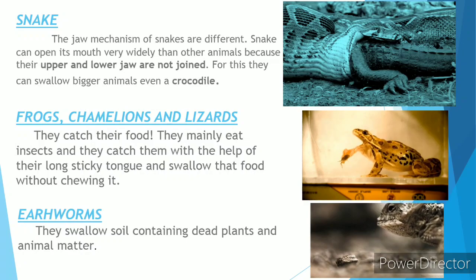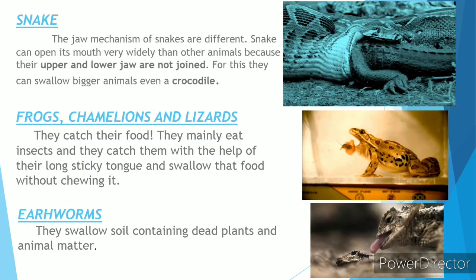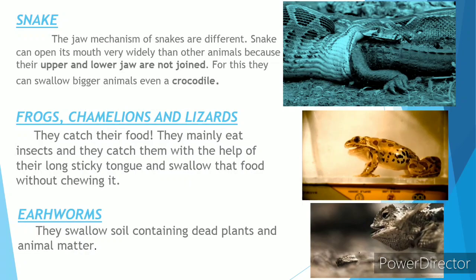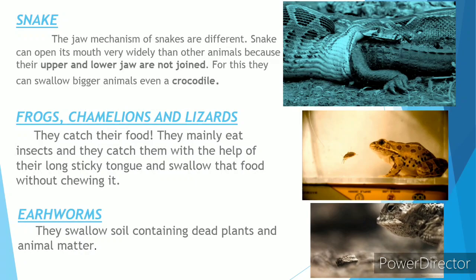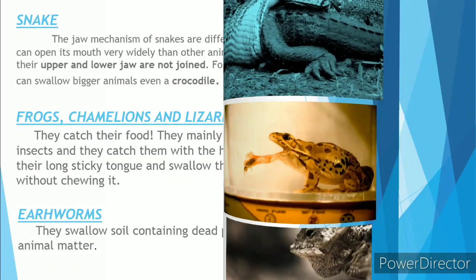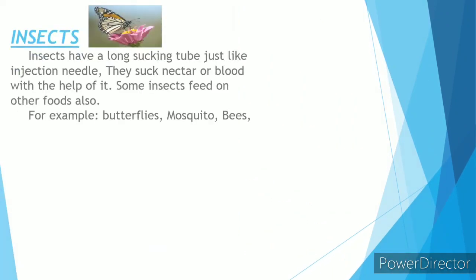Next is the earthworm. Earthworms swallow soil containing dead plants. After swallowing the soil, they extract the dead plant and animal matter from it — that's how they eat their food. Next are insects such as butterfly, mosquito, and bees.